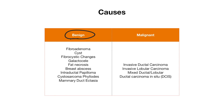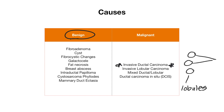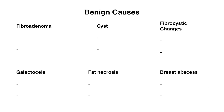Some of the malignant causes include invasive ductal carcinoma, invasive lobular carcinoma, or a mixed picture of both, as well as ductal carcinoma in situ. The most common cause of breast cancer is invasive ductal carcinoma. If you remember from anatomy, the breast tissue is composed of lobules where milk is produced that drains into ducts and is eventually released through the nipple.